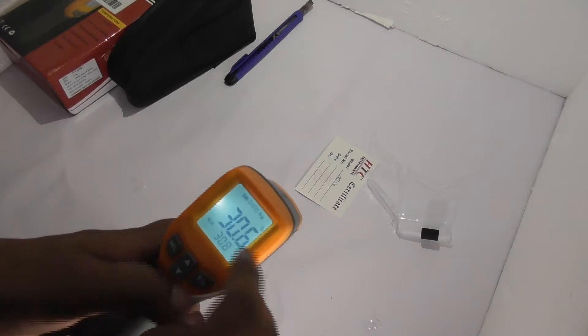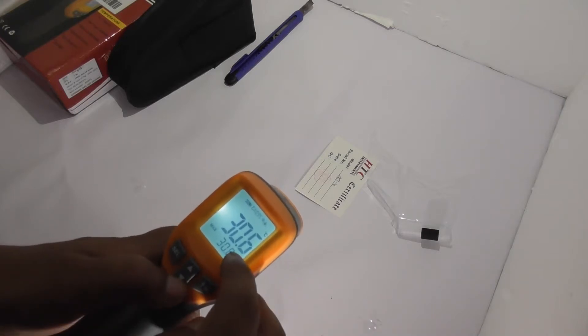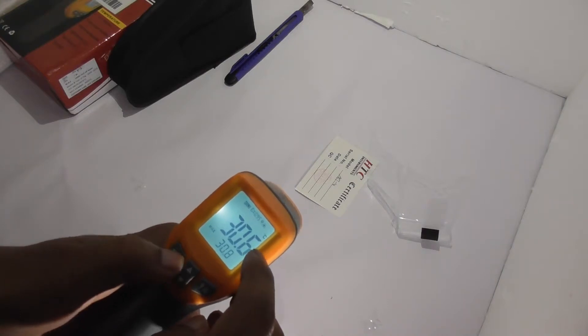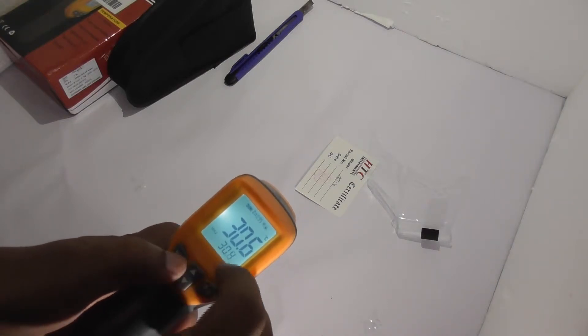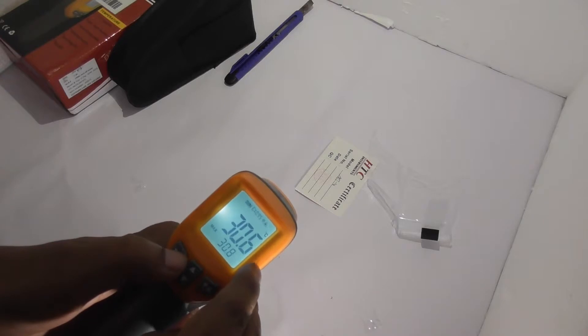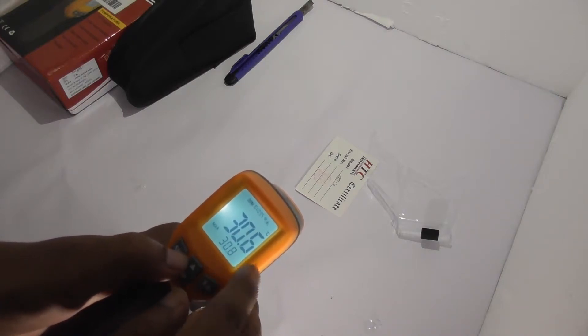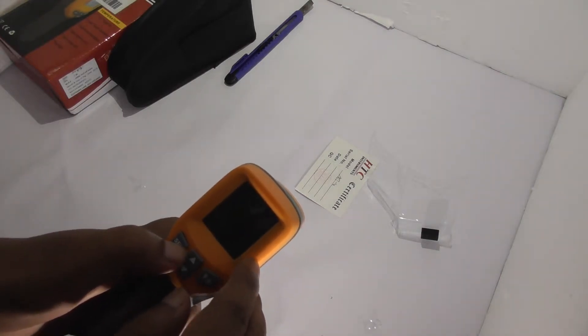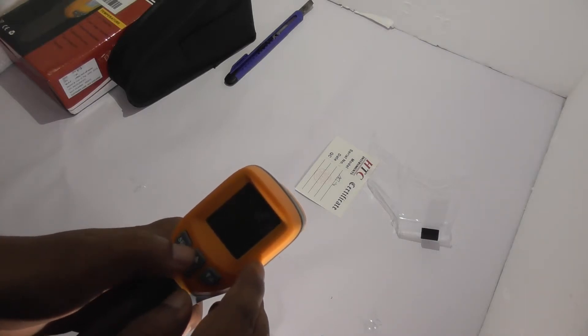It will also show the maximum and minimum record values. You need to press the set button, and you will see the maximum temperature. Ever since you've turned on and measured temperature using this infrared thermometer, you will be able to see the maximum and minimum temperature recorded.